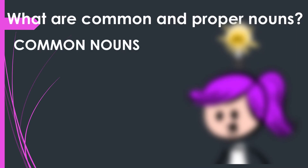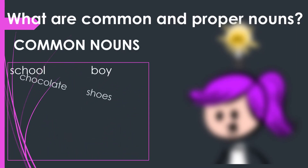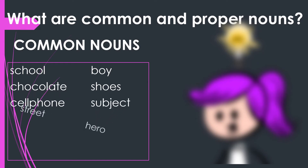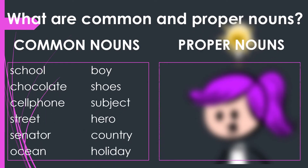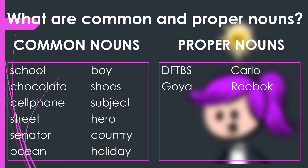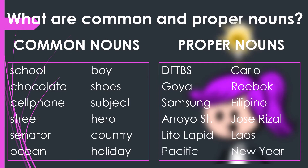Examples of common nouns are: school, boy, chocolate, shoes, cell phone, subject, street, hero, senator, country, ocean, and holiday.